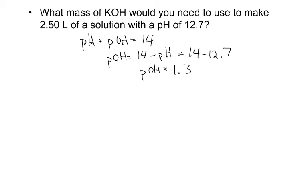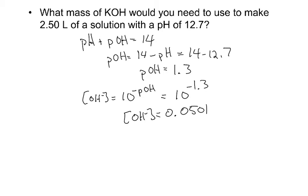Then I'm going to use that hydroxide ion concentration is 10 to the minus pOH, or 10 to the minus 1.3. So my hydroxide ion concentration comes out to be 0.0501 molar.